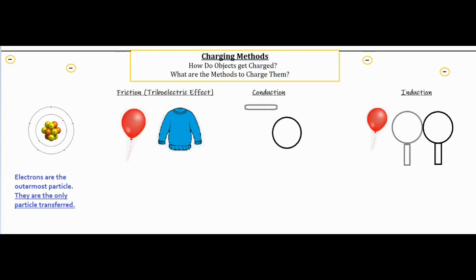This diagram of an atom shows that the electrons are the outermost particle, so they are the only particle transferred. In here is our nucleus of the atom which is filled with the positive protons, and then the little orange spheres that aren't marked are the neutrons that aren't charged, and that nucleus is basically going to stay put.